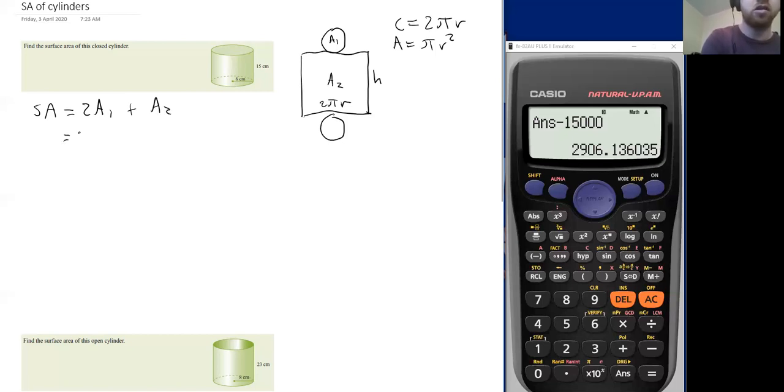Which means that the surface area is going to be 2πr² because you've got two circles that you're finding the area of plus 2πr and it's a rectangle. So that's the length of that. And then you're going to times it by the height.